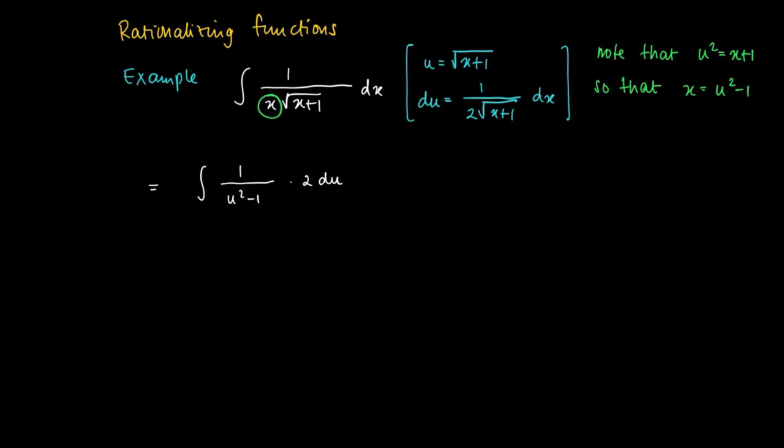And this is a quadratic term in the denominator, so we may decompose this one in its factors. So minus 1 over 1 plus u du plus the integral over 1 over u minus 1, since 1 over u squared minus 1 times 2 equals minus 1 over 1 plus u plus 1 over u minus 1.